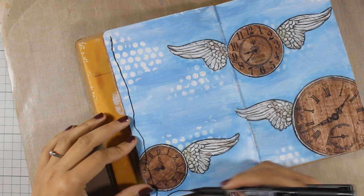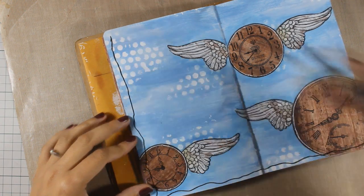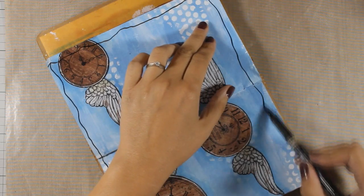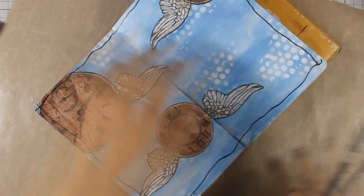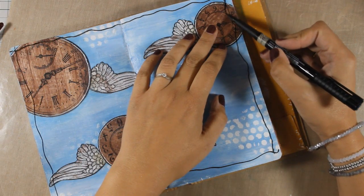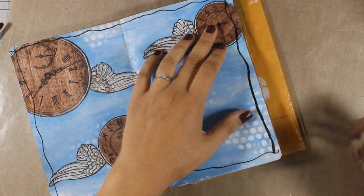With a black marker I am drawing some freehand lines around the edges of my layout which are going to create a border. Once I'm happy with those lines I am going to color the outside with black acrylic paint.